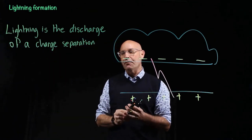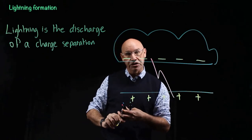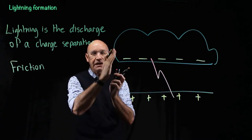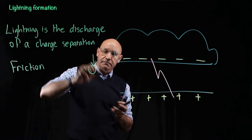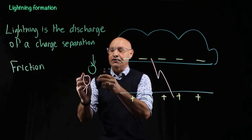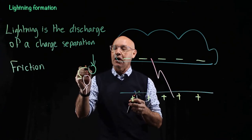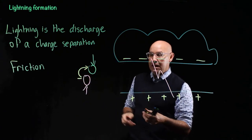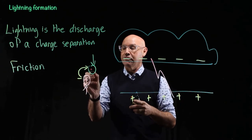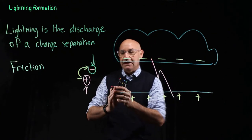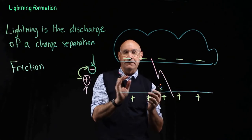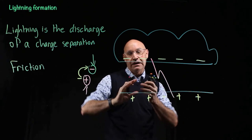This charge separation builds up due to friction. With friction, particles are rubbing against each other and colliding with each other. When this happens, electrons on the surface of one of the particles transfer over to the other particle. So the particle that loses electrons becomes positive, and the particle that gains electrons becomes negative. And that charge separation is what causes lightning.